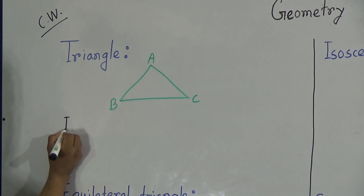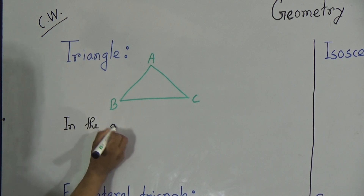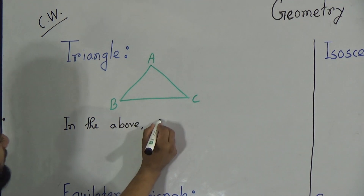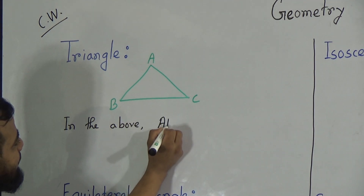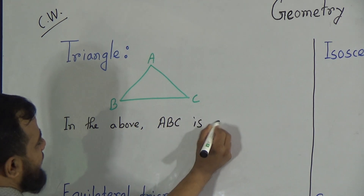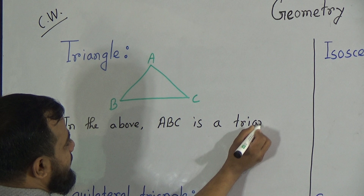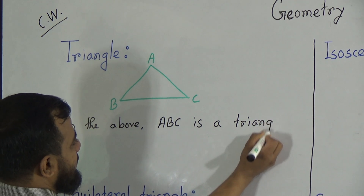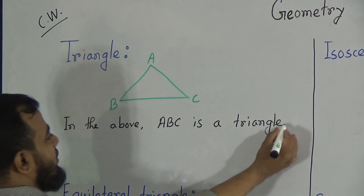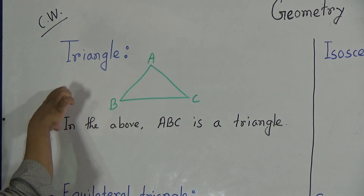In the above figure, A, B, C is a triangle.